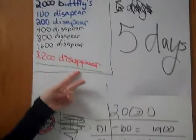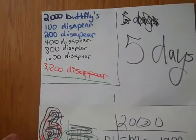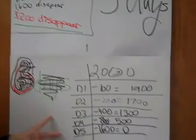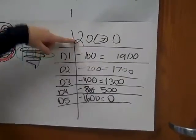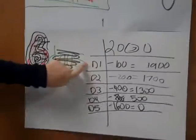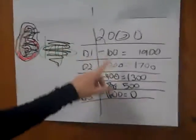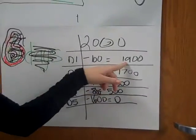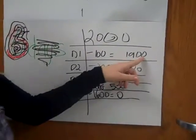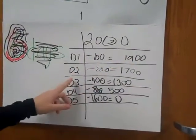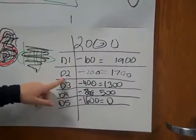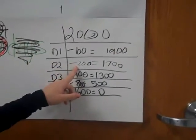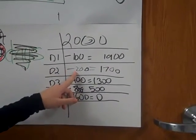As you can see we went a little too far, but now we're going to get to our graph. So we started out with 2,000. Then on day 1 you have to subtract 100, which gets you 1,900. So the next day, which is day 2, you have to subtract...